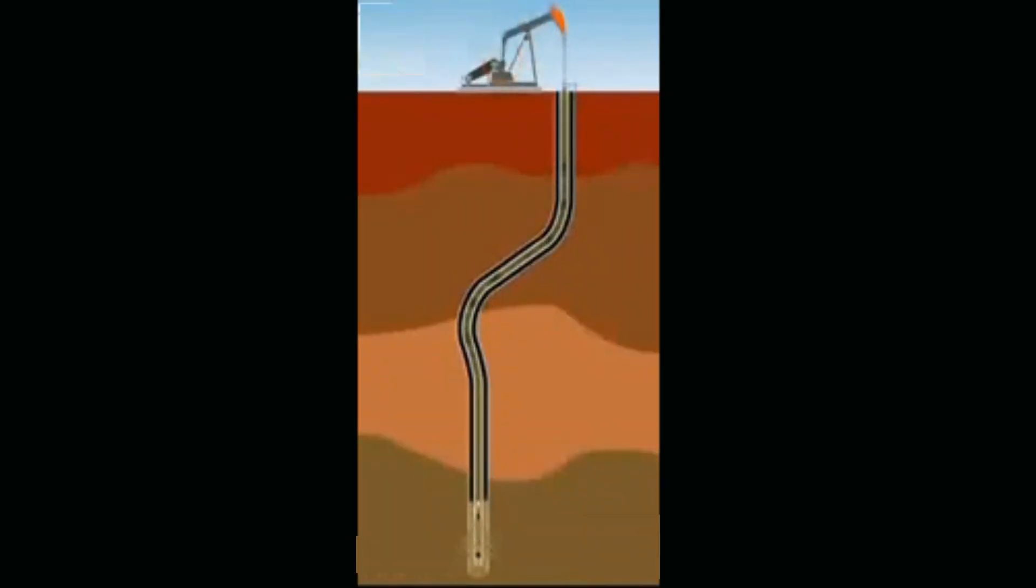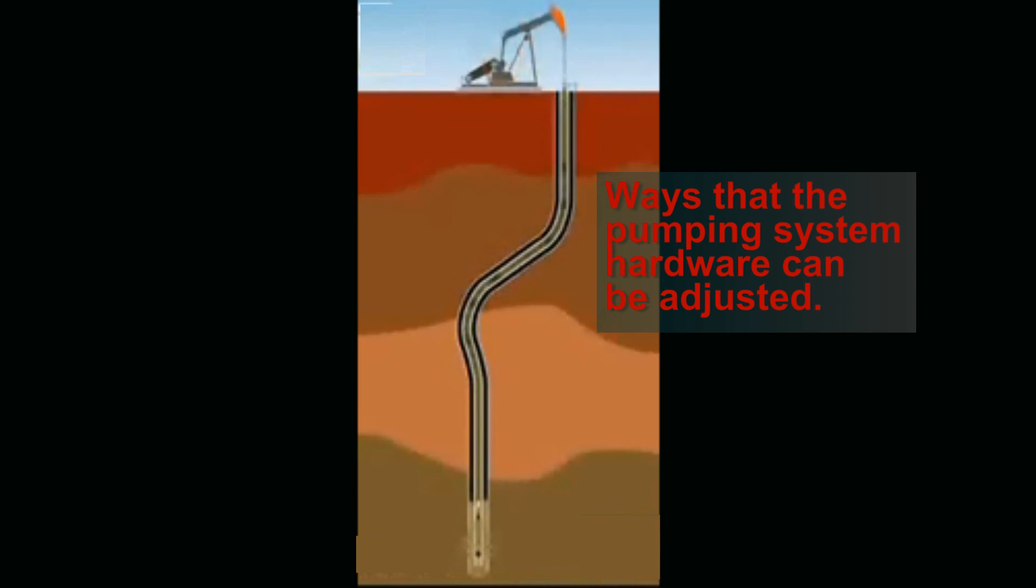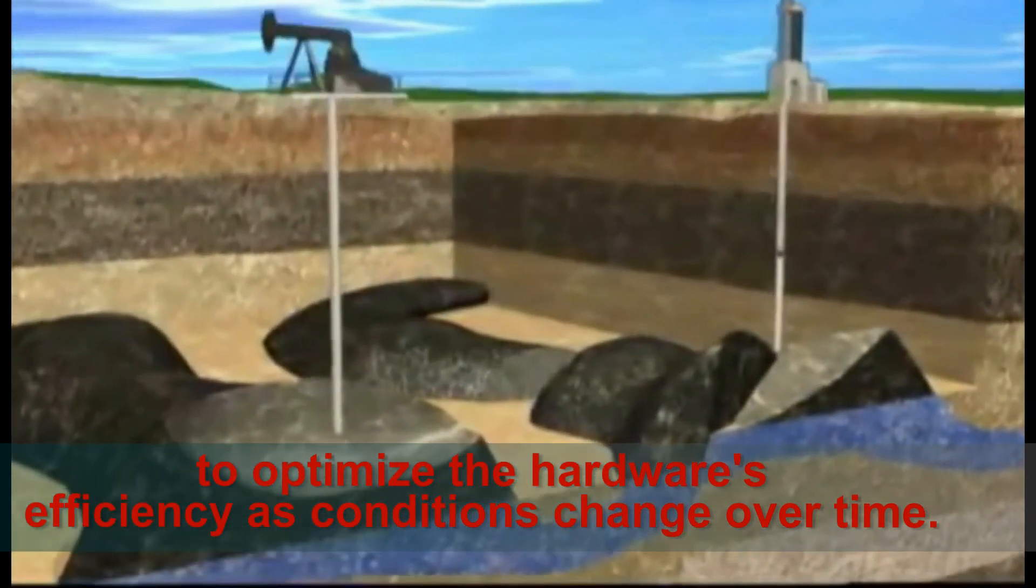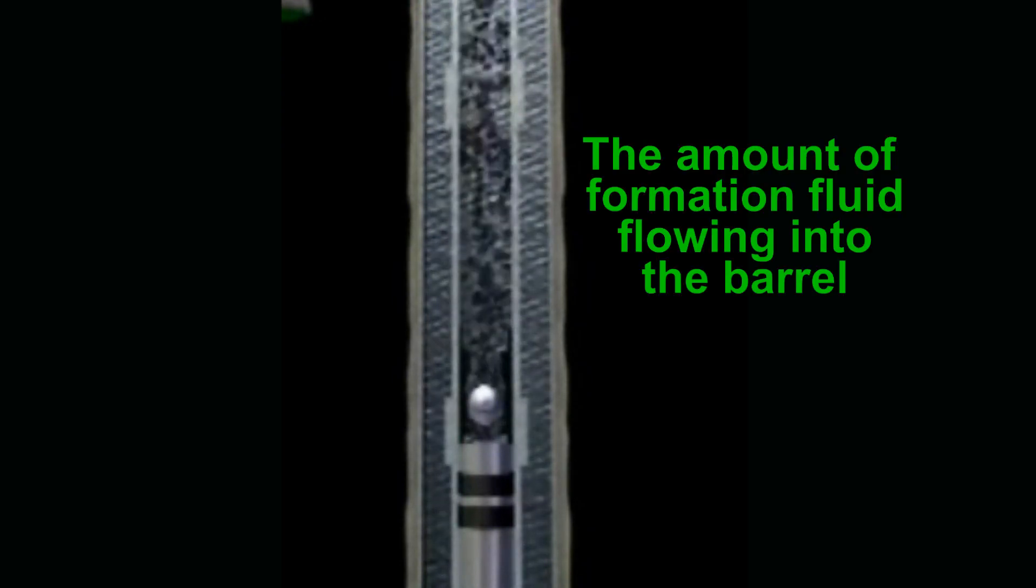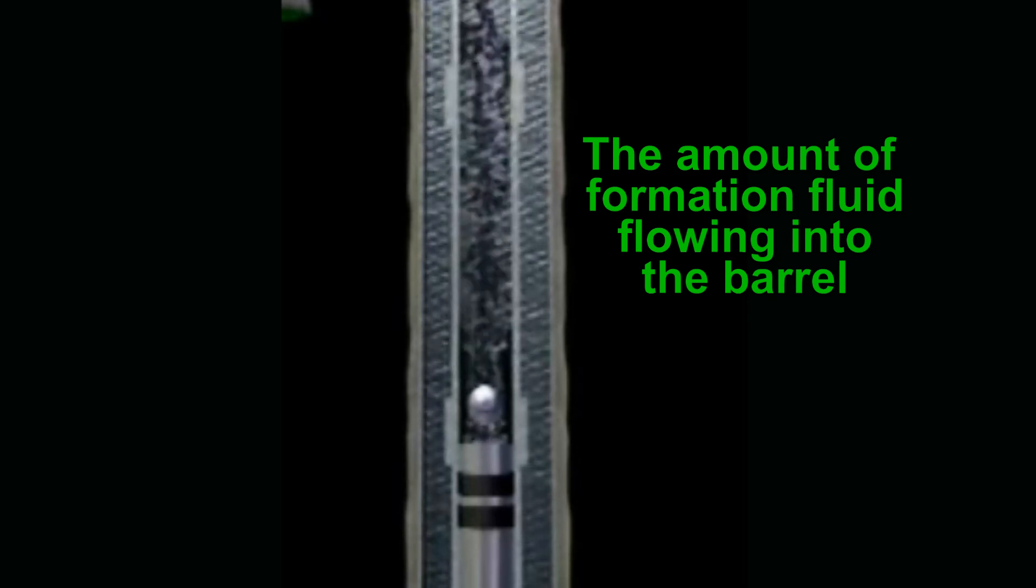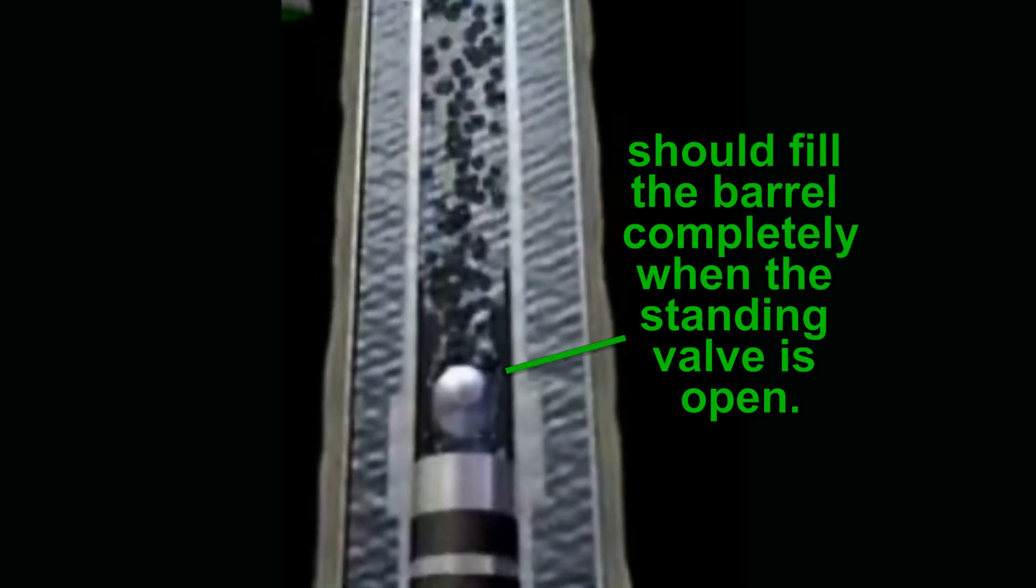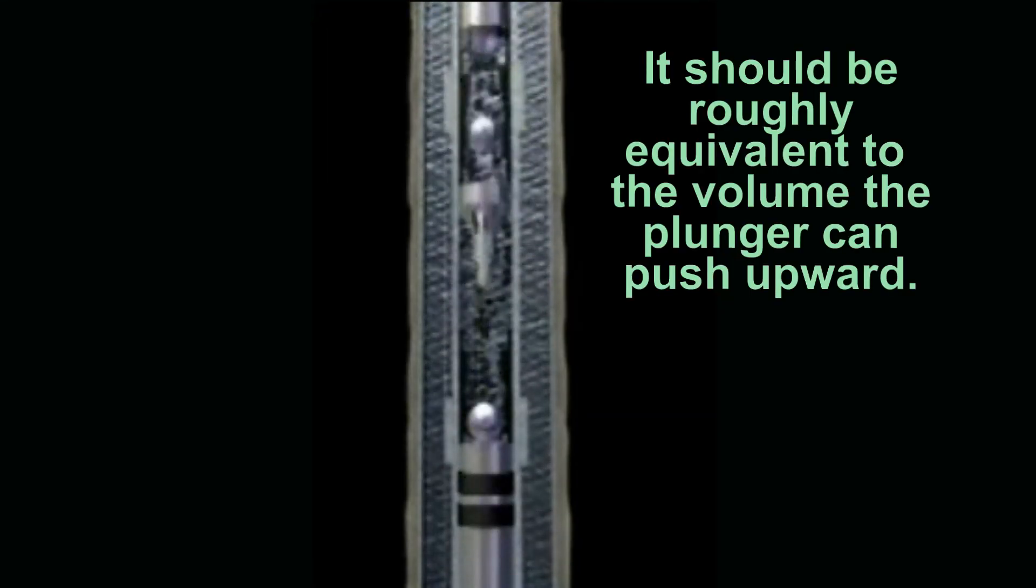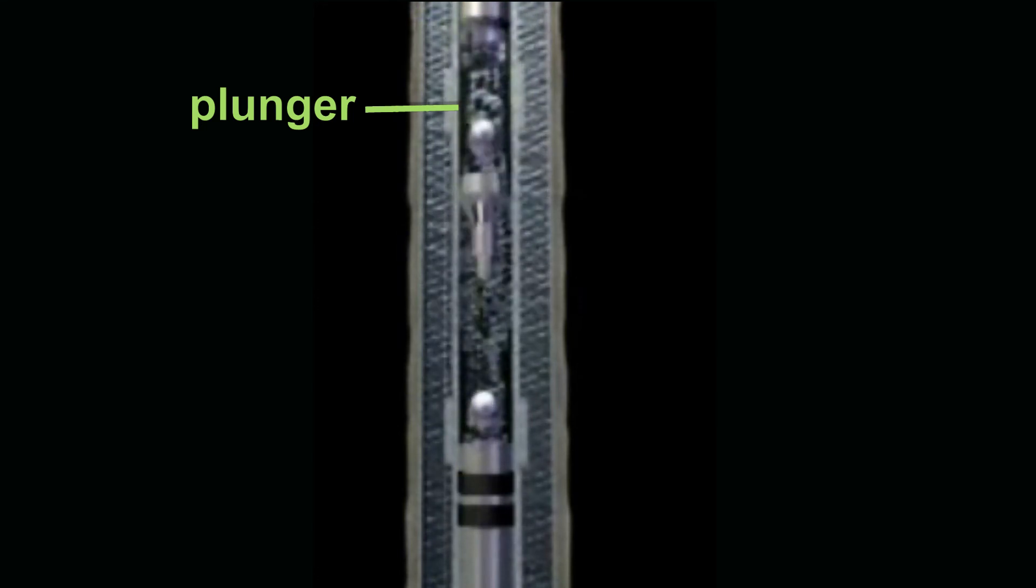Now that we've examined the sucker rod pump and shown how it works, let's now turn our focus to ways that the pumping system hardware can be adjusted to optimize the hardware's efficiency as conditions change over time. Here, it is important to keep in mind that for this system to work well, the amount of formation fluid flowing into the barrel should fill the barrel completely when the standing valve is open. It should be roughly equivalent to the volume that the plunger can push upward.